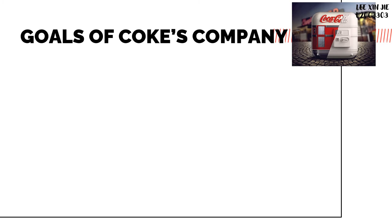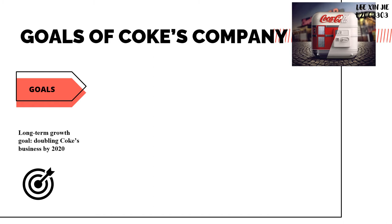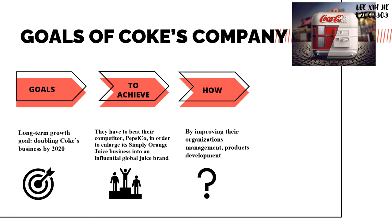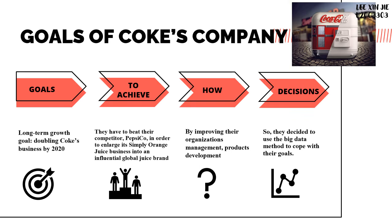Before we look into it, let's identify what is the goal of Coca-Cola Company. The long-term growth goal of Coca-Cola Company is doubling their business by 2020, and doubling here means enlarging. So to achieve this goal, the company decided to start with the Simply Orange Juice business. The first alternative that the company chose was to beat their biggest competitor, PepsiCo, and change their products into an influential global spread. To achieve this, the managers of Coca-Cola Company decided to improve their organization's management and product development with the help of Big Data technology.